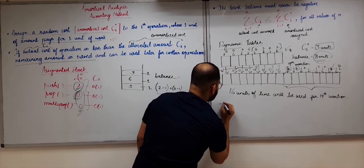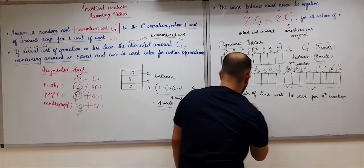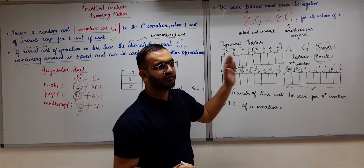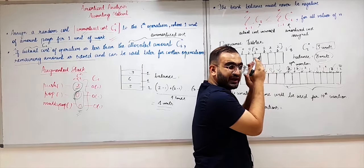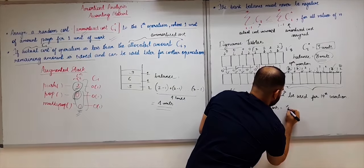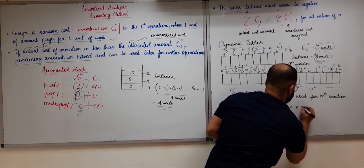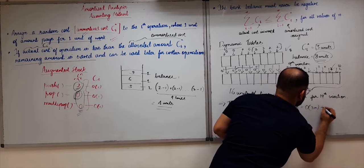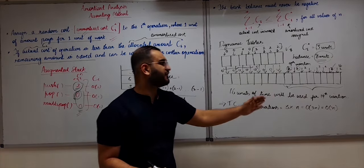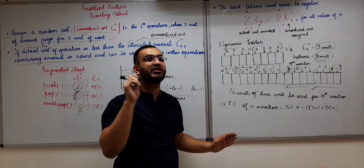If we need to find the time complexity of n insertions, it equals the amortized cost of a single insertion (which is 3) multiplied by n. So this gives order of 3n, which is order of n. This is the same complexity we found for dynamic tables using the aggregate method.